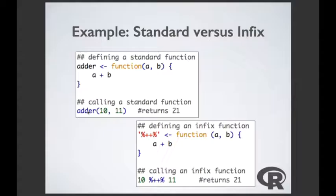Here's another infix example: an equality-checking operator using an underscore symbol. It takes a and b, uses an if statement — if a == b returns the character 'equal', otherwise returns 'not equal'. So 10 %_%10 returns 'equal' (whereas == returns the logical TRUE), and 10 %_% 11 returns 'not equal'. This is how you make a custom operator that returns character descriptions instead of logical values.